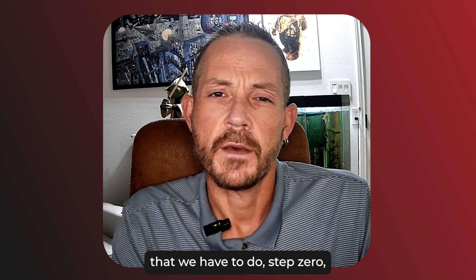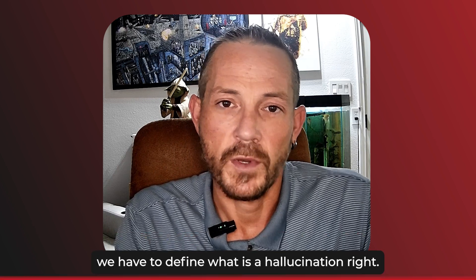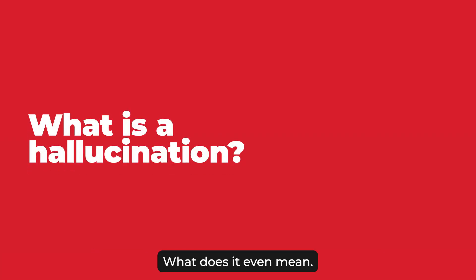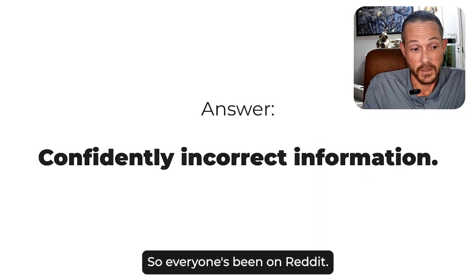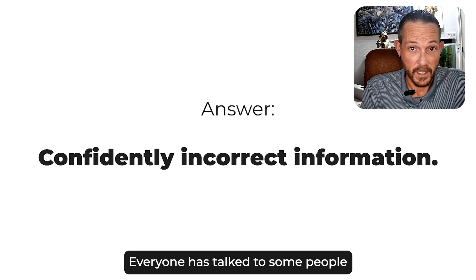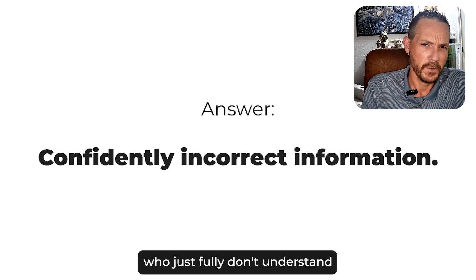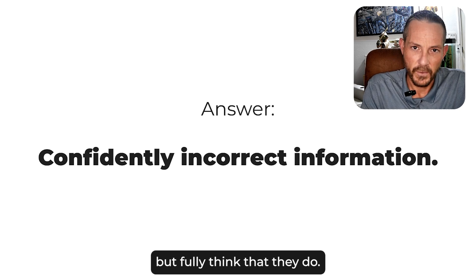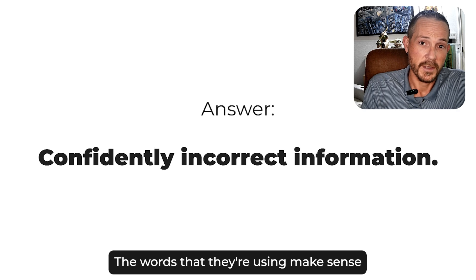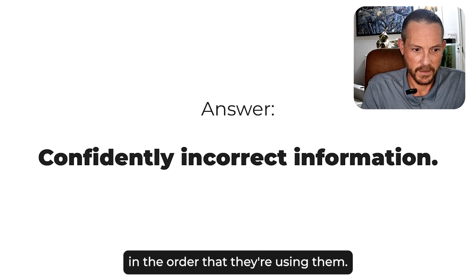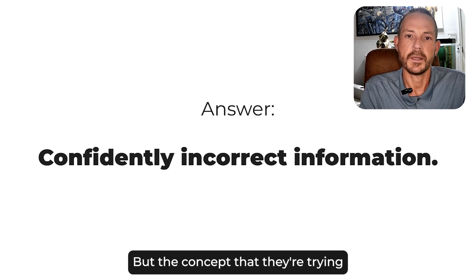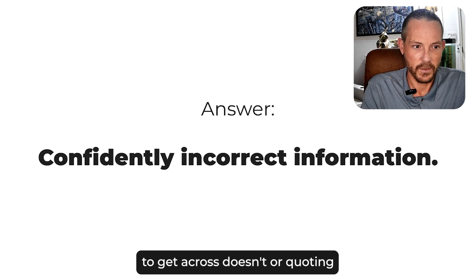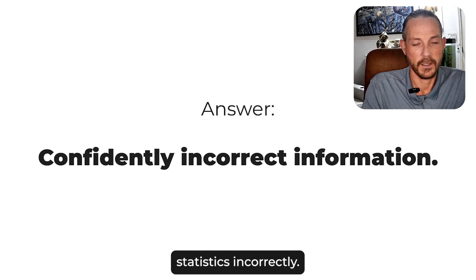So the first thing we have to do — step zero — we have to define what a hallucination is. What does it even mean? At the end of the day, it's just constantly incorrect information. Everyone's been on Reddit, talked to people who fully don't understand what they're talking about but fully think that they do. The words they're using make sense in the order they're using them, but the concept they're trying to get across doesn't. Or quoting statistics incorrectly.